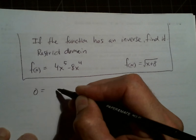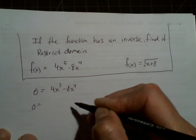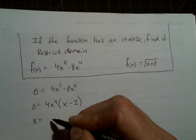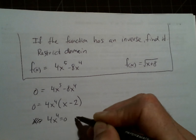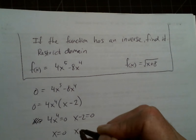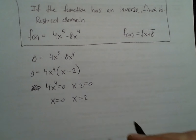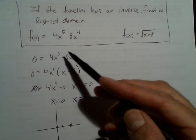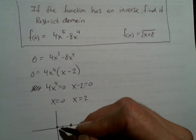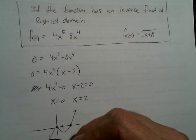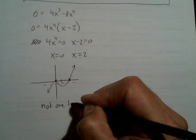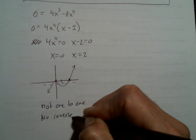Let's graph it and look for the x-intercepts. Setting each factor equal to zero gives x equals zero or x equals two. We know the graph goes up to the right, and it will fail the horizontal line test. So it is not one-to-one — no inverse function.